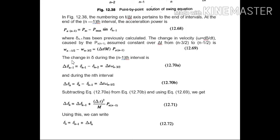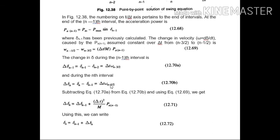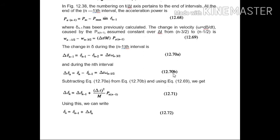Our actual goal is to calculate the change in rotor angle δ for a very small interval of time, so that we can plot the swing curve (δ versus t). We can write Δδ(n−1) = Δt · ω(n−3/2), and similarly Δδ(n) = Δt · ω(n−1/2) (equations 12.70a and 12.70b). Subtracting equation 12.70a from 12.70b and using equation 12.69, we get the key recurrence relation. Substituting all values gives the final expression: δ(n) = δ(n−1) + Δδ(n).